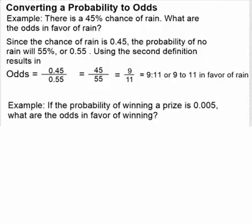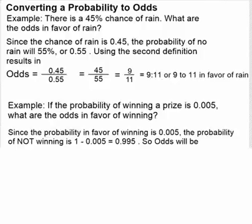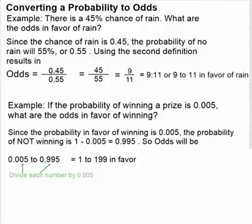In the next example, we have a probability of winning a prize being 0.005. What are the odds in favor of winning this prize? Since the probability of winning is 0.005, the probability of not winning is 1 minus 0.005, which is 0.995. You can always subtract the probability from 1 to find the probability of the event not happening. So we get odds of 0.005 to 0.995. Dividing each by 0.005 gives us 1 to 199. So the odds in favor of winning are 1 to 199.